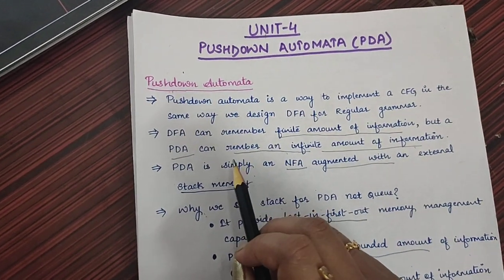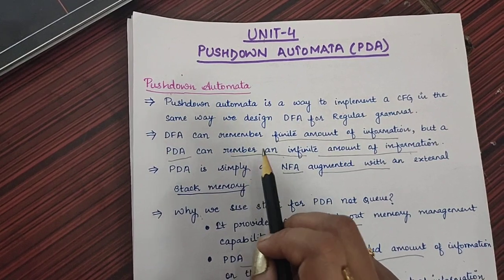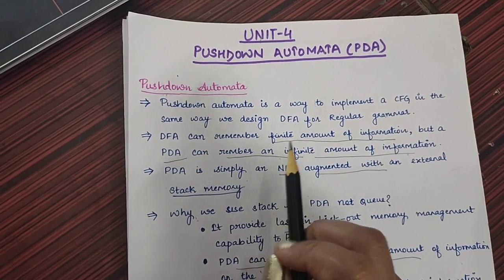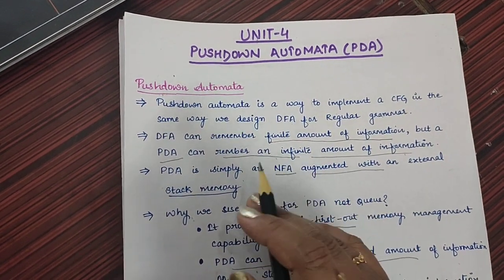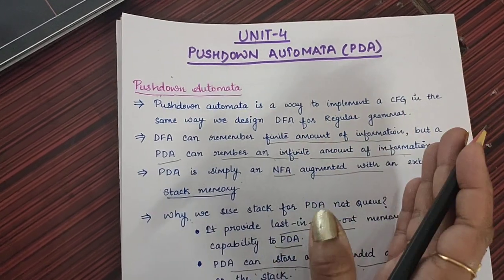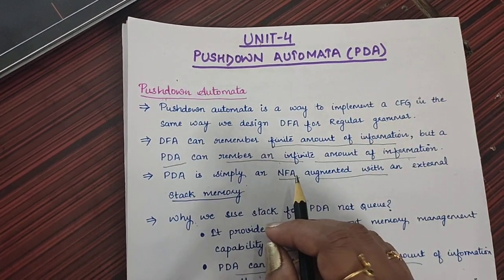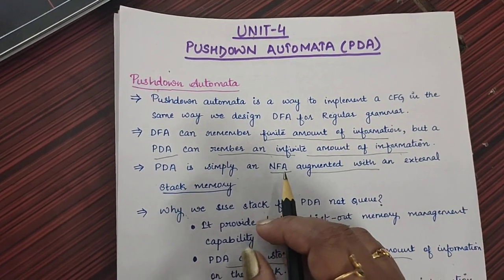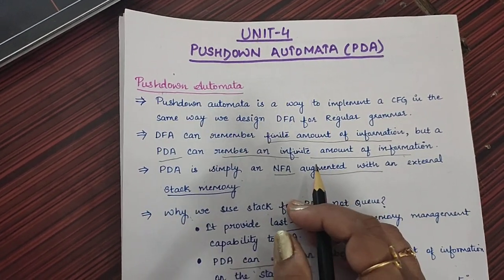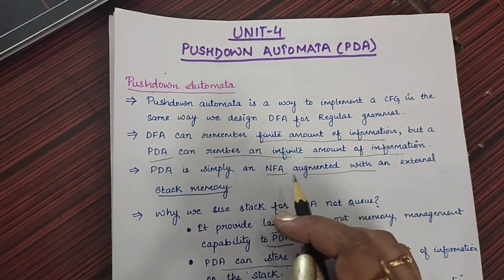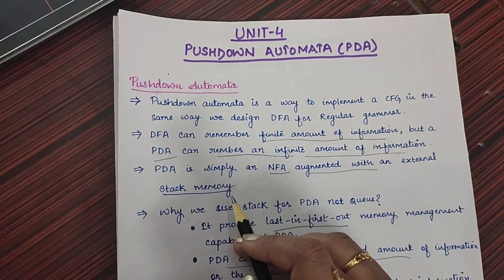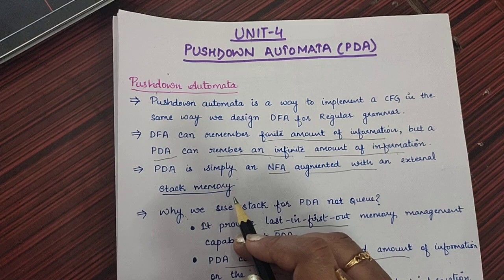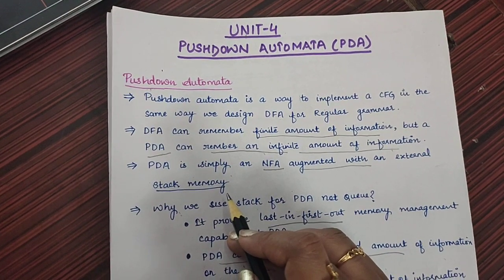DFA and PDA have a basic difference that in DFA we have limited amount of information that we can access or remember on the input tape or finite control machine, whereas in pushdown automata, we are able to remember infinite amount of information. This is possible because of the external memory which is augmented with it and that is called a stack.